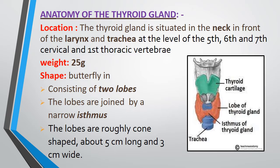The thyroid gland is situated in the neck, in front of the larynx and trachea, at the level of the 5th, 6th and 7th cervical vertebra and 1st thoracic vertebra. Weight: 25 grams. Shape: butterfly shape. It consists of two lobes joined by a narrow band called the isthmus. The two lobes are roughly cone-shaped, about 5 cm long and 3 cm wide.